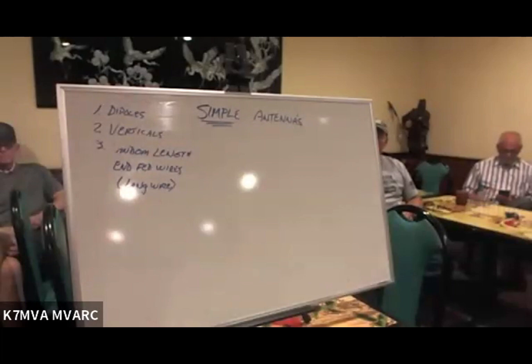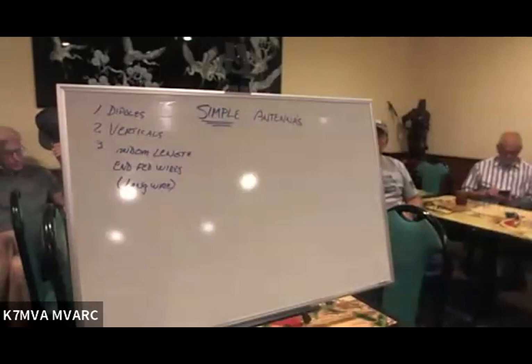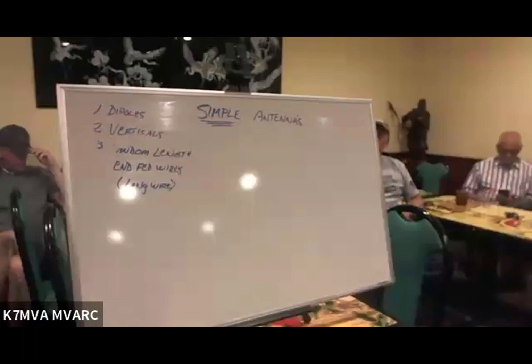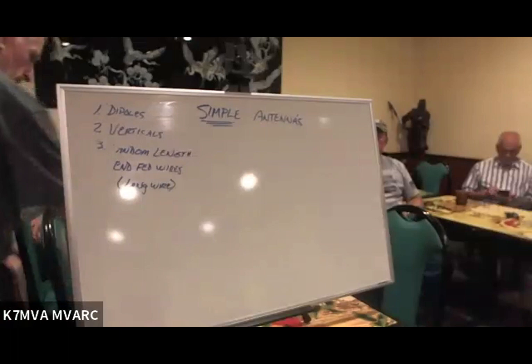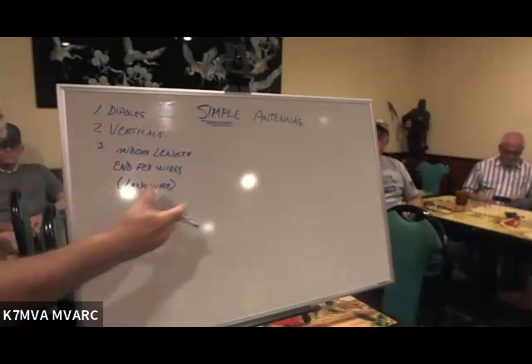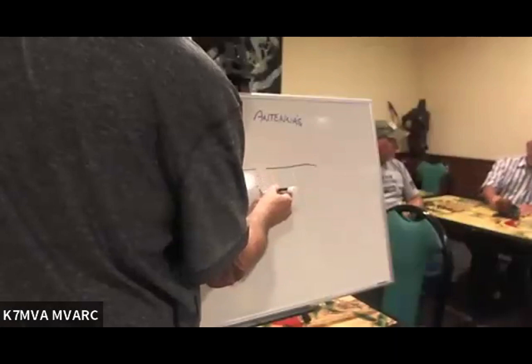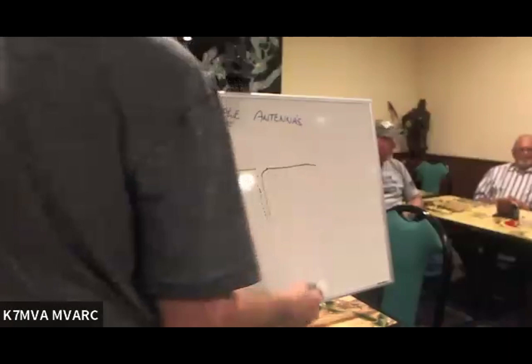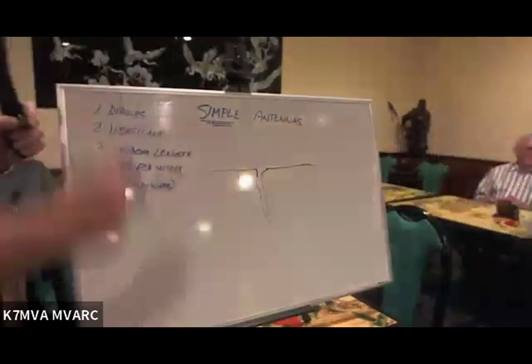Dipole antennas, pretty simple to build. The simplest antenna to build that there is. So that's the shield of the coax, that's the center conductor. One side, the center conductor goes to one side of the wire. The other side goes to the opposite side.